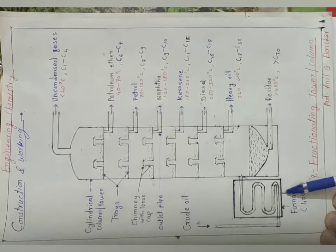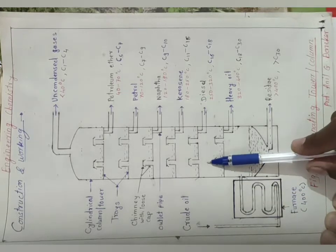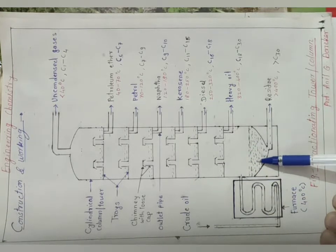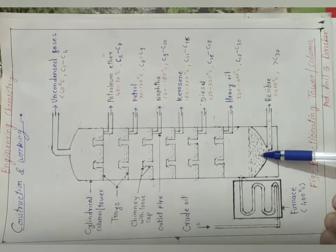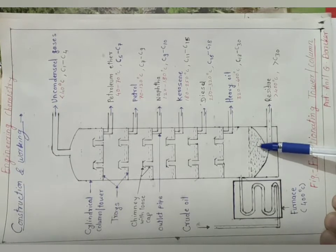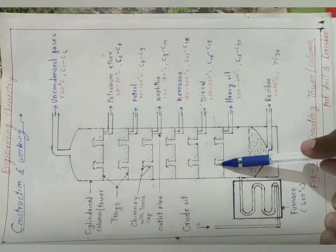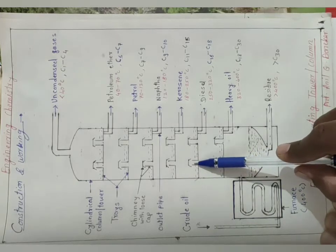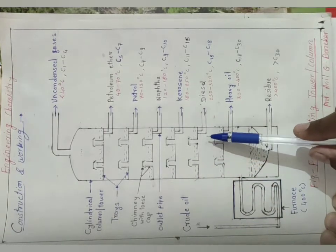So please try to understand: in the furnace, liquid converts into vapors and those vapors come outside. And here, unvaporized form of crude oil is left behind at the bottom. That is called residue, while remaining vapors go up in the fractionating column through the chimney. And as per their boiling point, they get condensed.